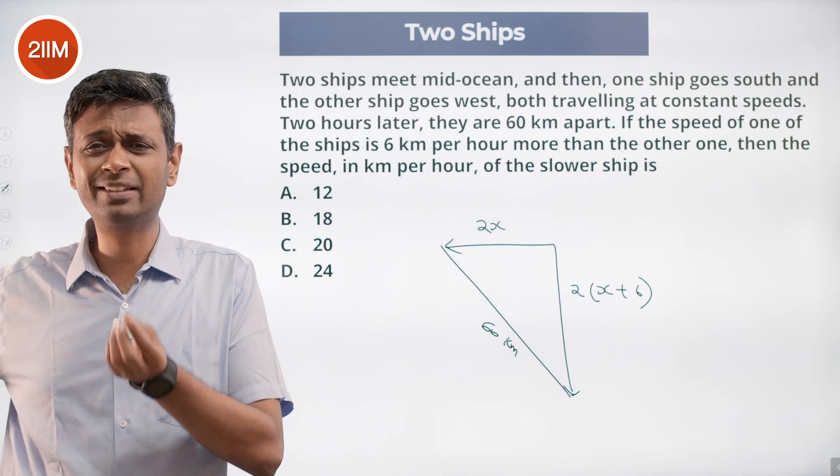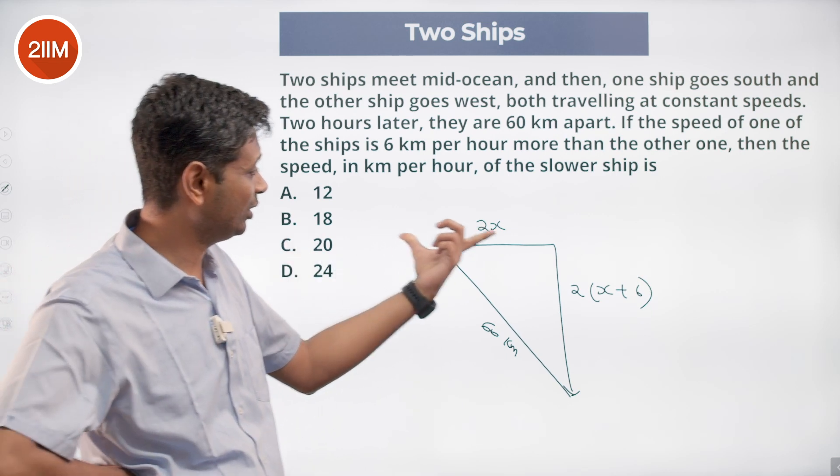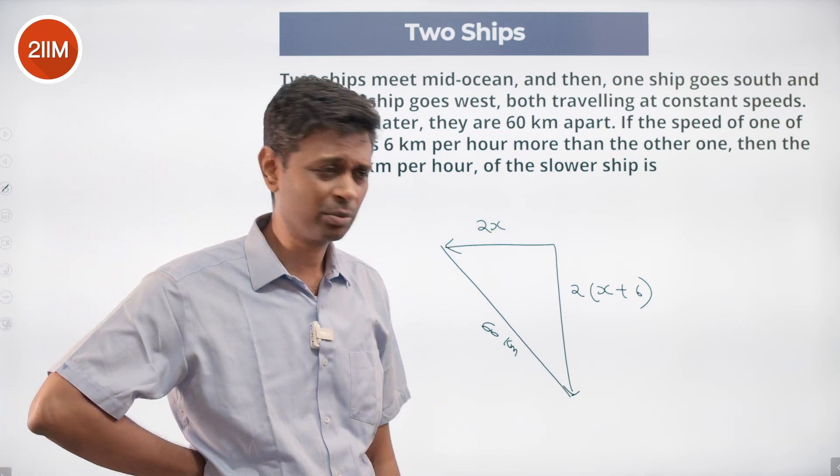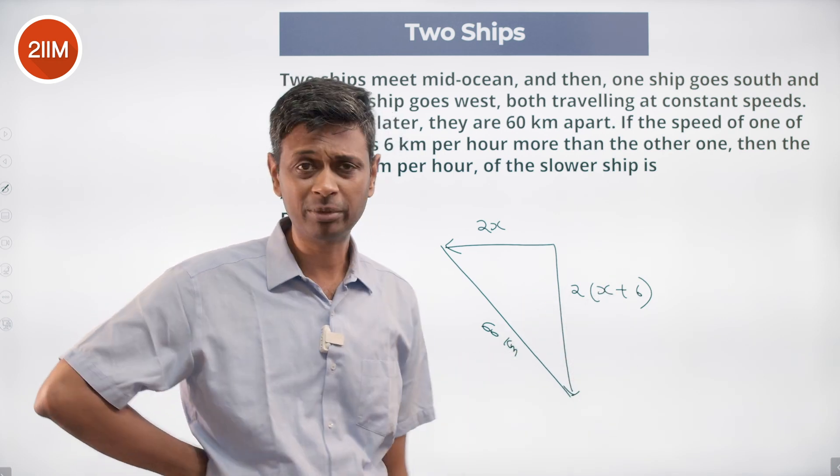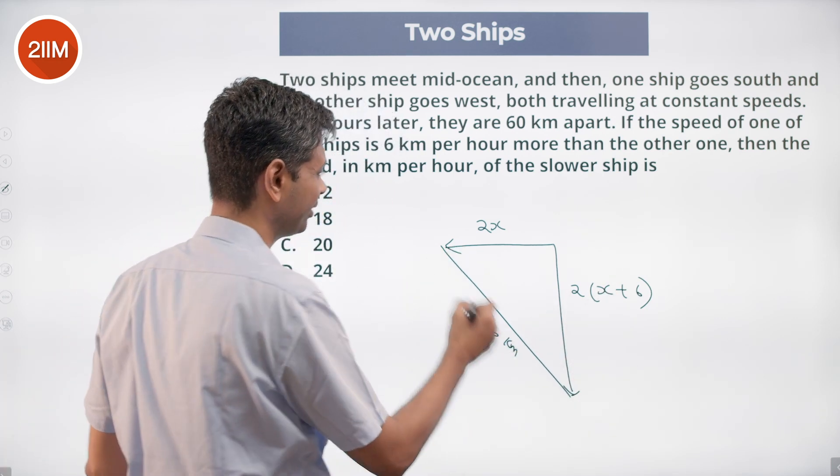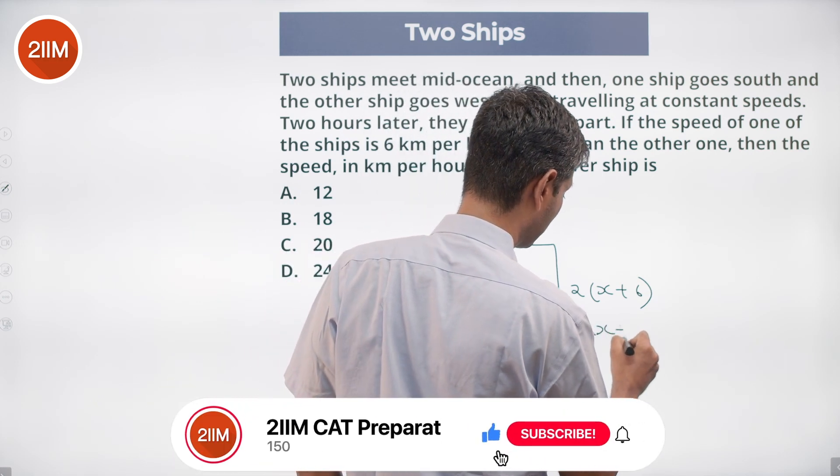Speed of the slower ship, let it be x kilometers per hour. In two hours, it will travel 2x kilometers. The faster ship's speed will be x plus 6 kilometers per hour. In two hours, it will travel 2 times x plus 6. Now this is 2x, this is 2x plus 12. The difference is 12.